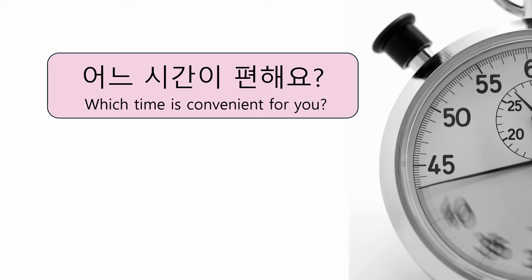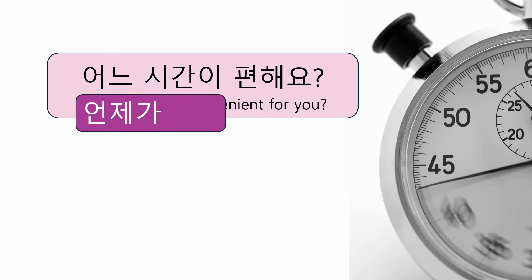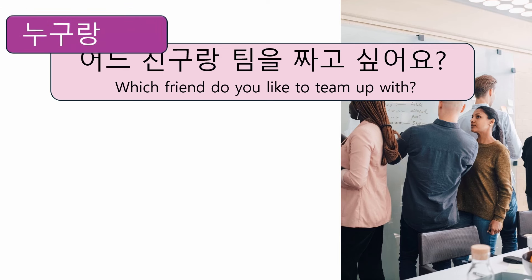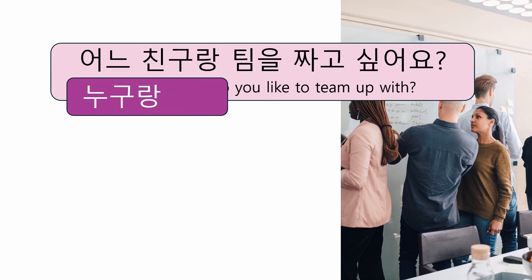어느 시간이 편해요? — Which time is convenient for you? — can be replaced with 언제가 편해요? — When is convenient for you? And 어느 친구랑 팀을 짜고 싶어요? — Which friend do you like to team up with? — can be replaced with 누구: 누구랑 팀을 짜고 싶어요? — Who do you like to team up with?